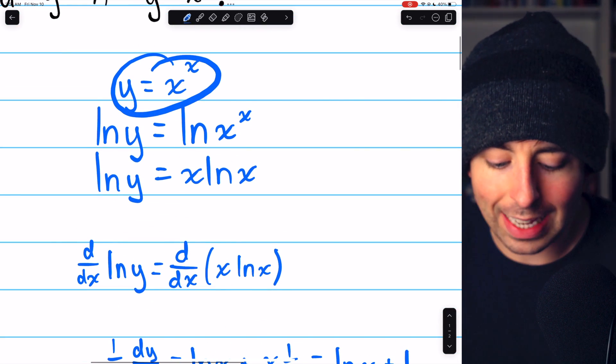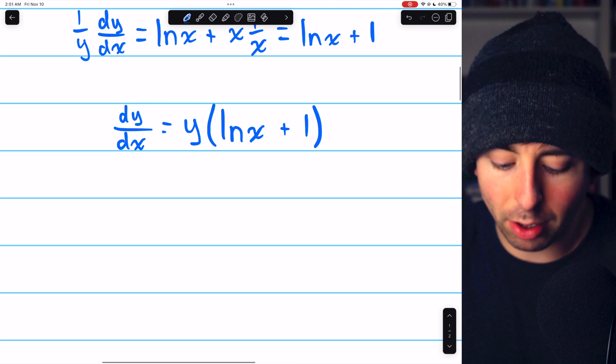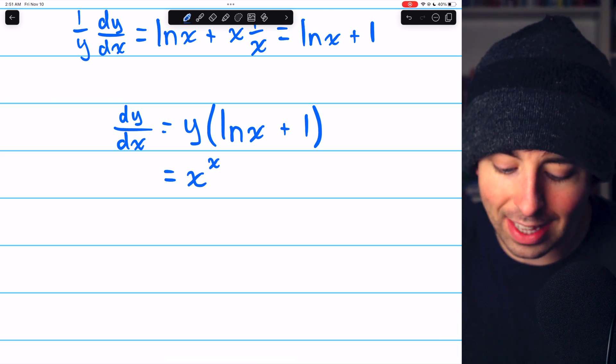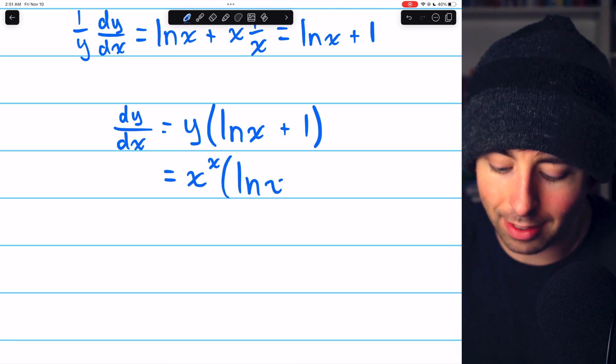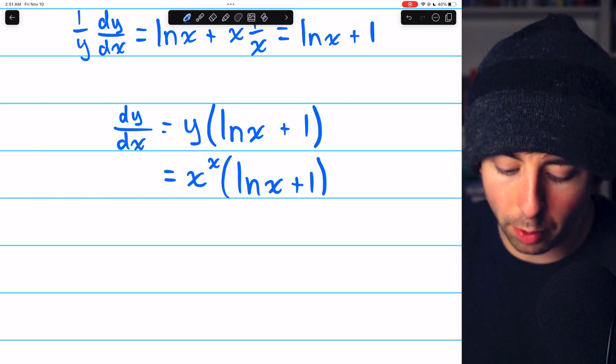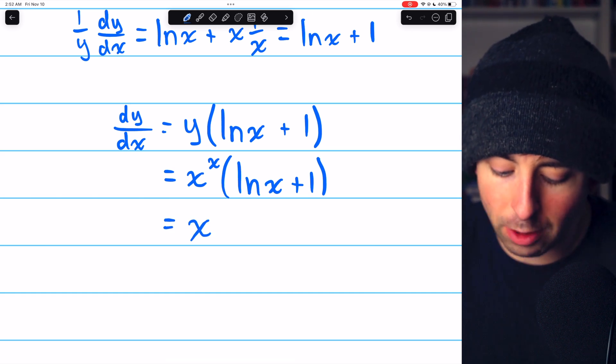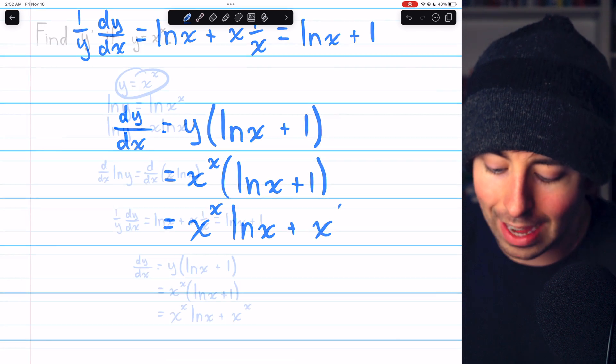But of course, y we know is x to the x. So dy dx equals x to the x times ln x plus 1, which we may prefer to distribute and finally write as x to the x ln x plus x to the x.